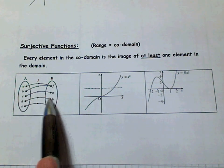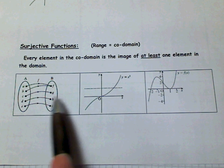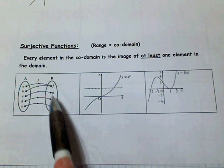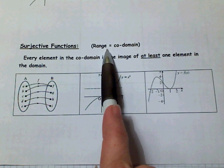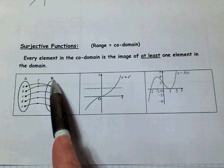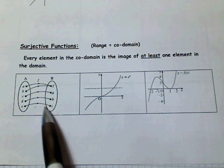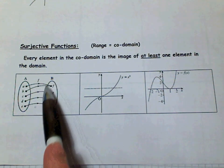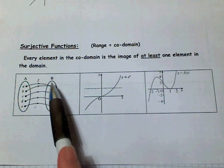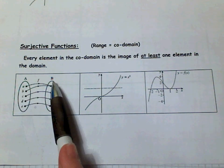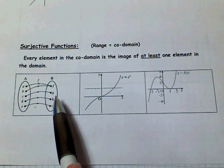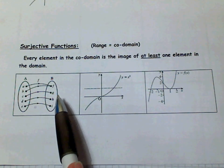C goes to G, D goes to H, and E goes to I. Now all of the co-domain has been used — this is very important. In a surjective function, the range is equal to the co-domain because every single value in the co-domain has been used in the range. Every single input has used up all of the possible outputs, or all of the elements in the co-domain.